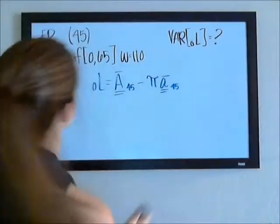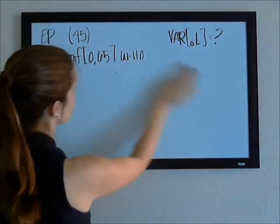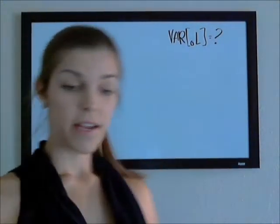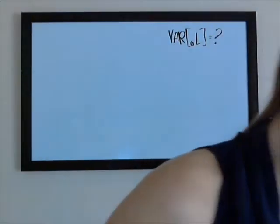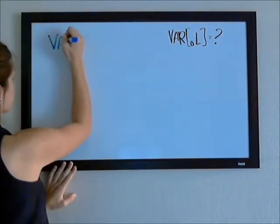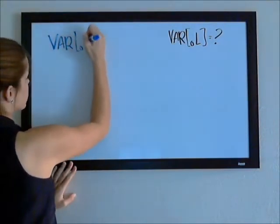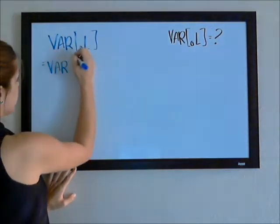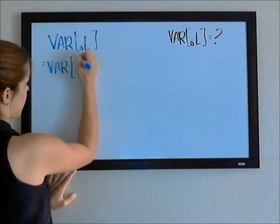I'm going to erase just to get some more room. Instead of starting with a formula for variance, I'm just going to work through it using what we already know. So, the variance of the loss at issue is the variance of our insurance,